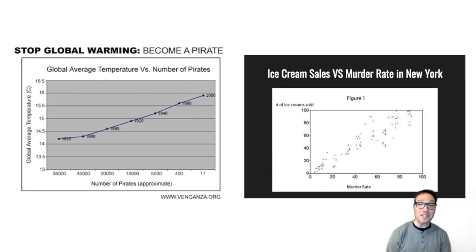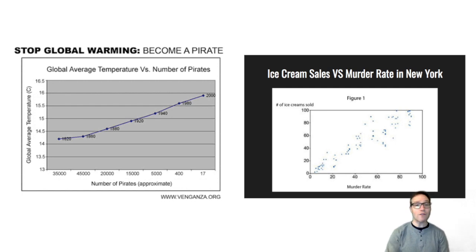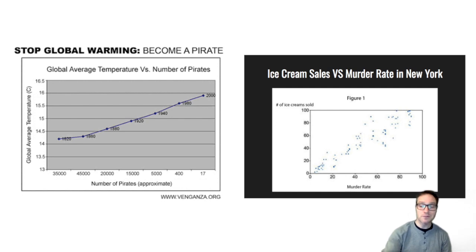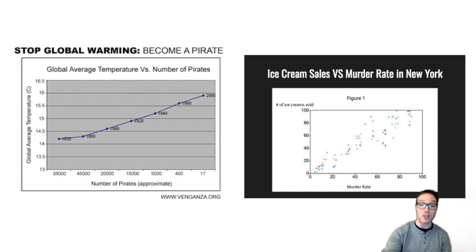According to these graphs, lack of pirates leads to global warming, and ice cream sales are driving the murder rate through the roof. These are great examples of correlation does not equal causation. These are actual relationships.